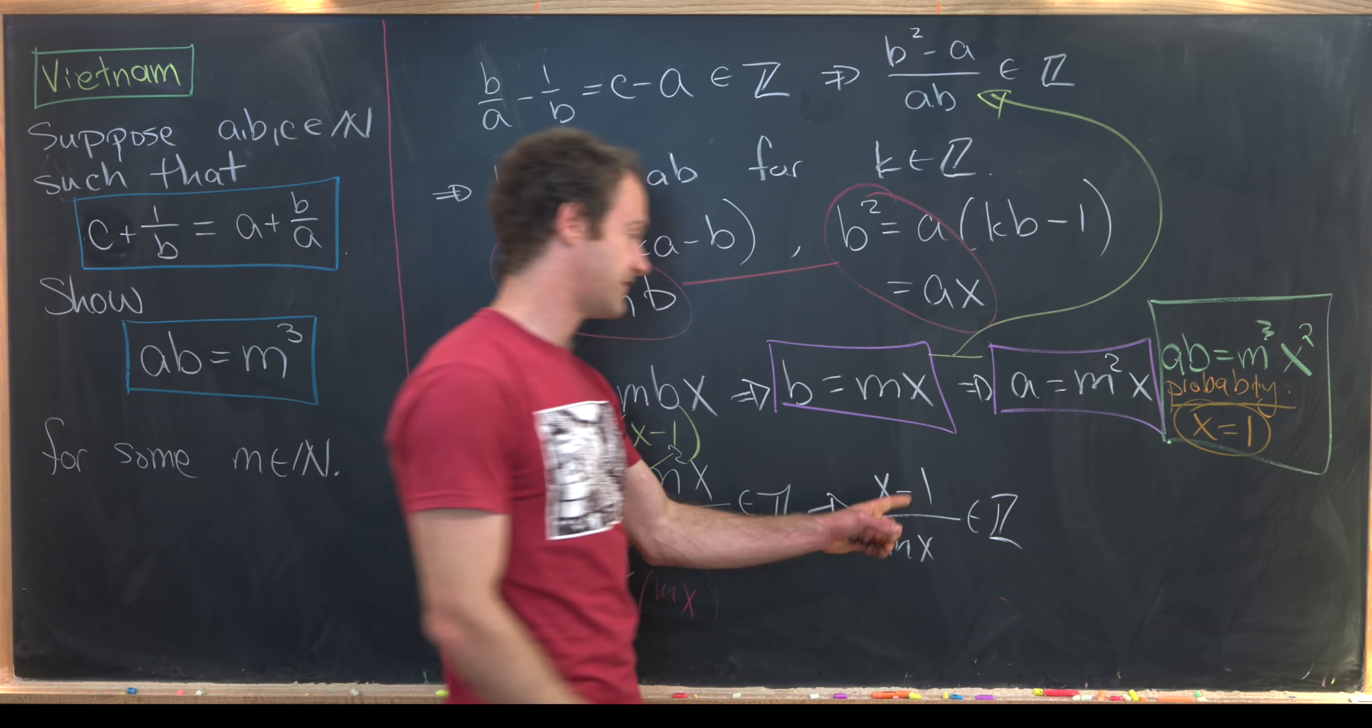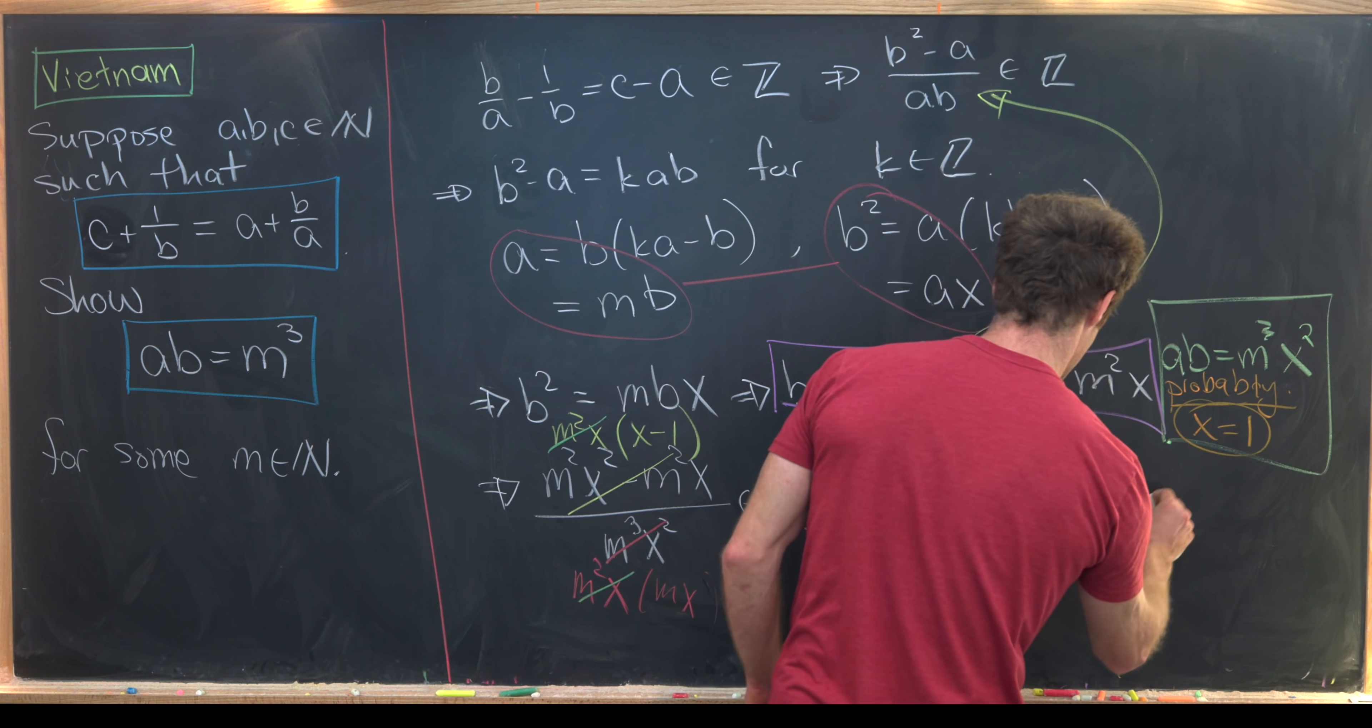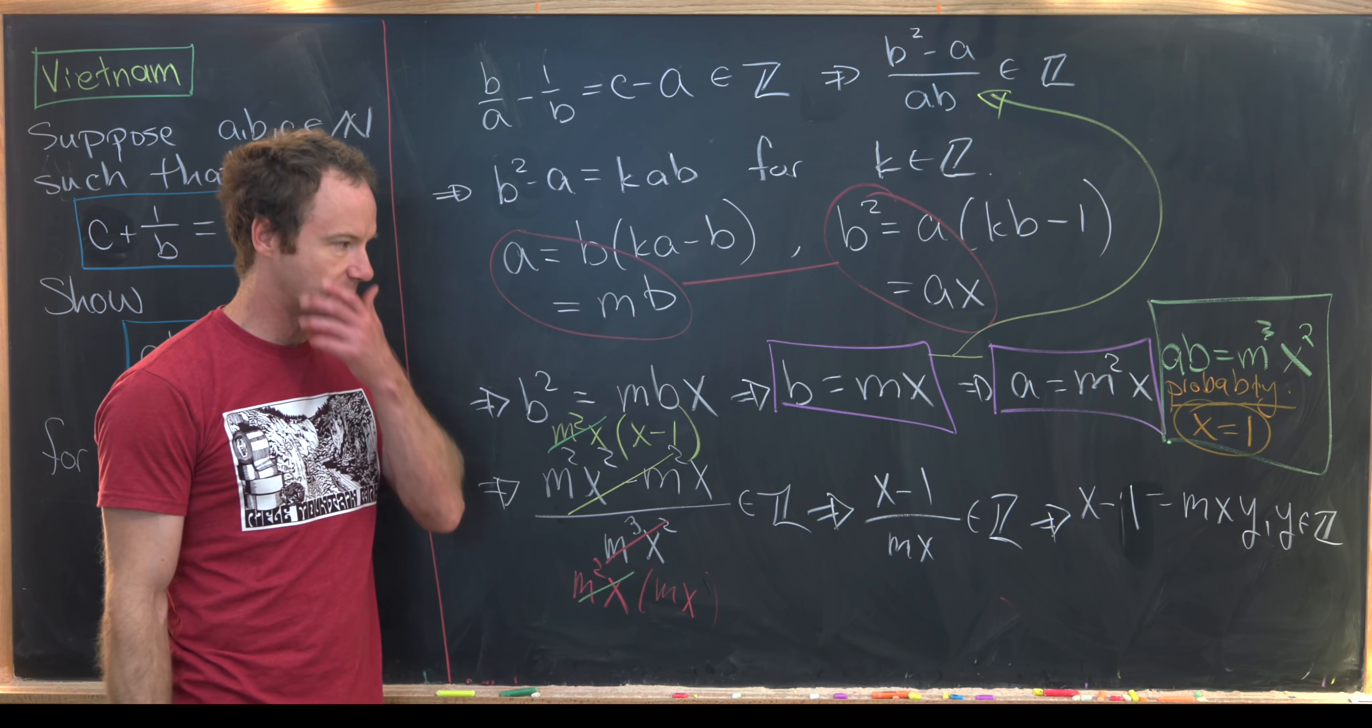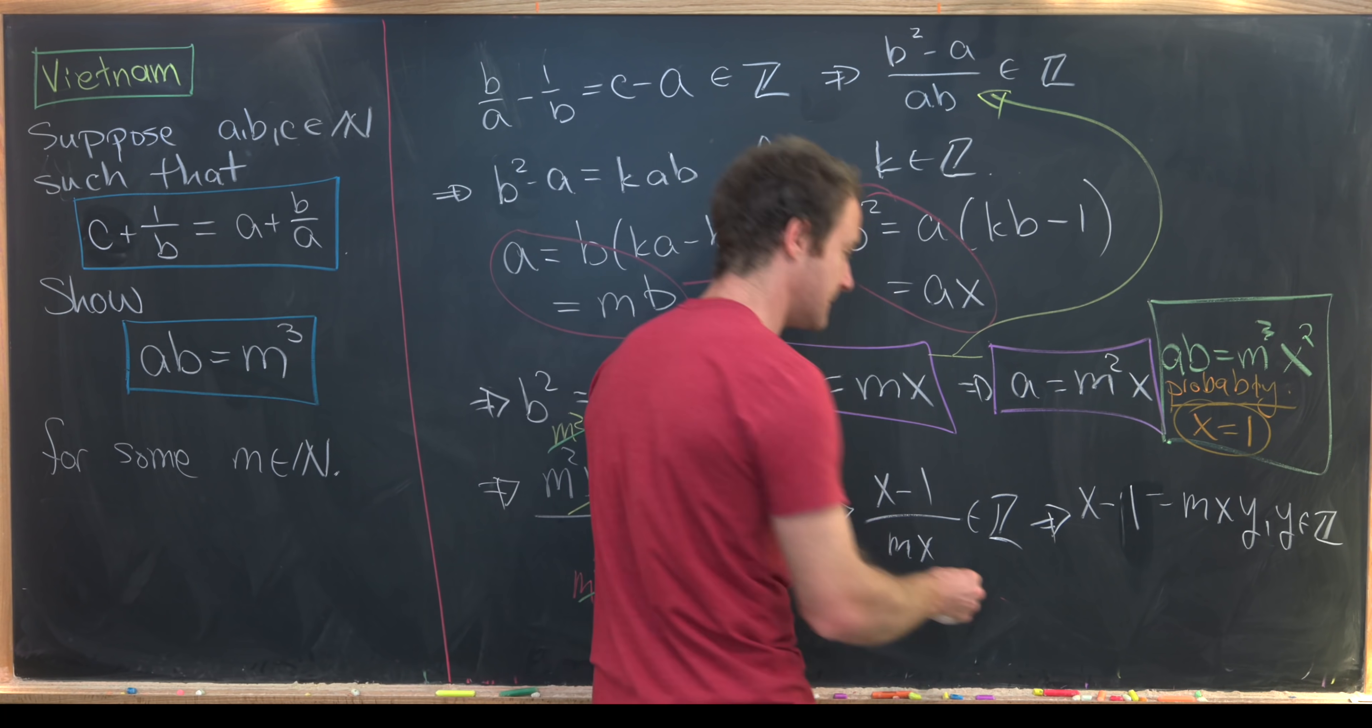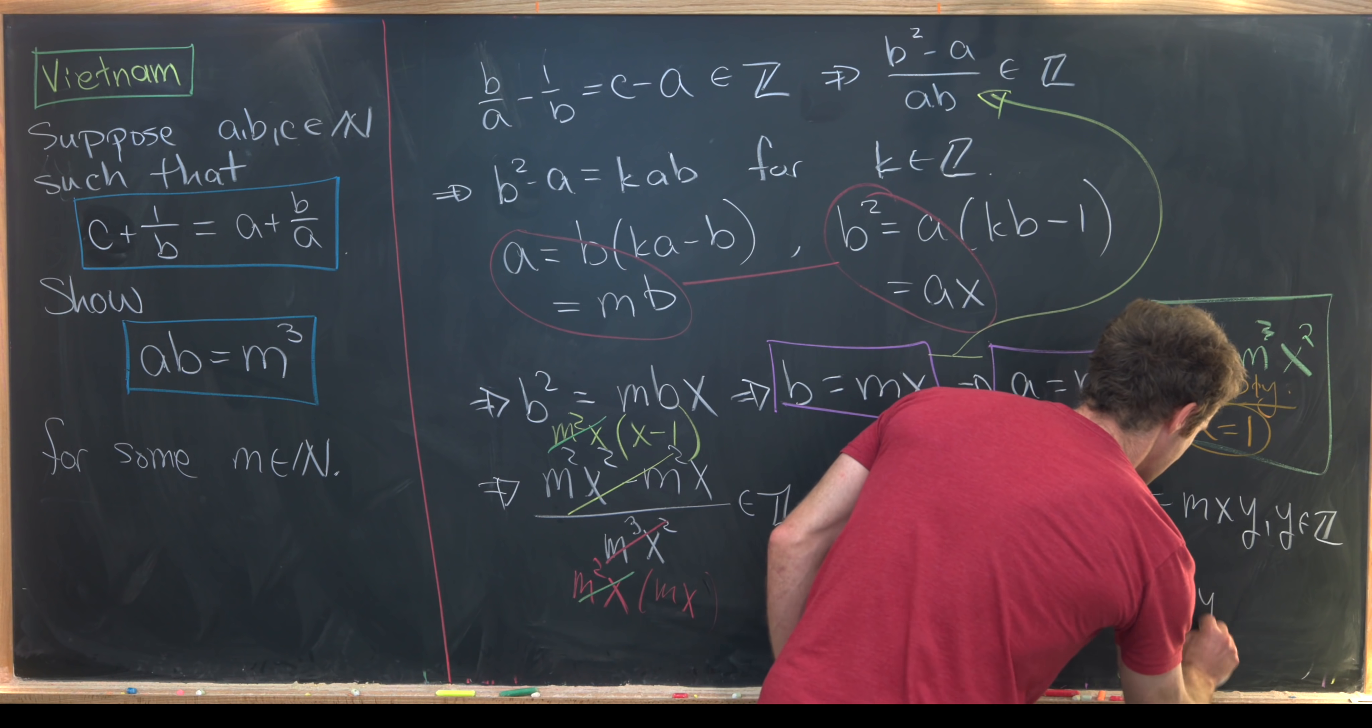But notice the fact that that's an integer means the numerator is a multiple of the denominator. So we have X minus 1 is equal to M times X times Y, where Y is some integer. Okay, so let's see where we can go from there. I'm going to rearrange this to solve for 1. Notice that tells us that 1 is equal to X times 1 minus MY.